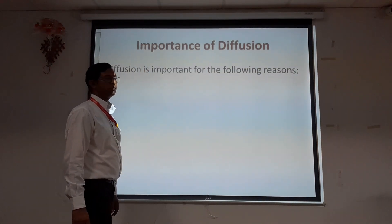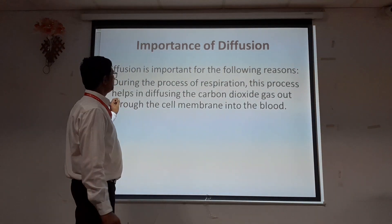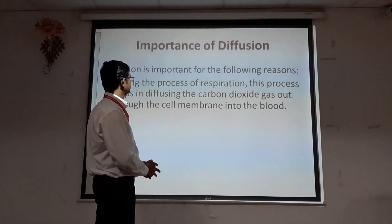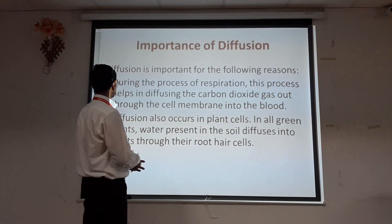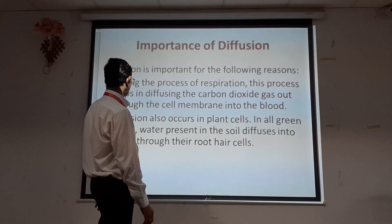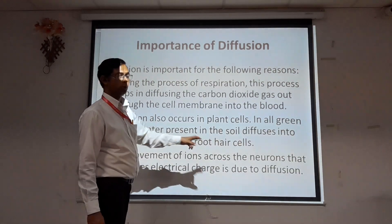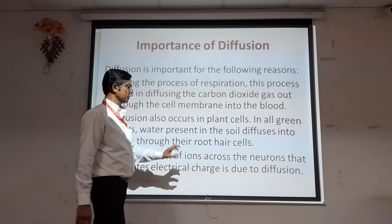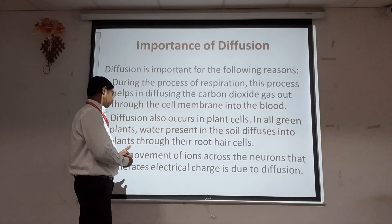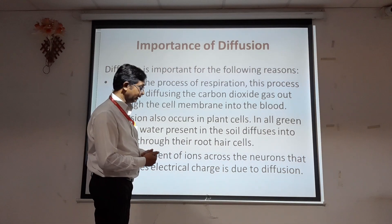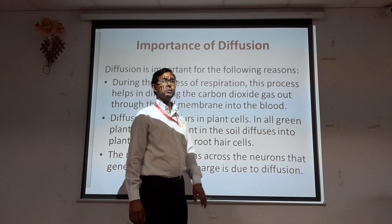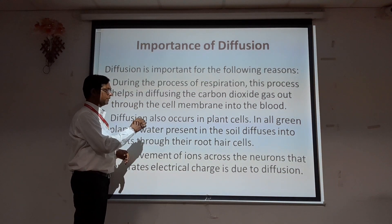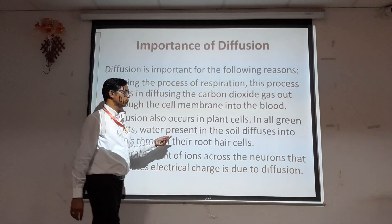Diffusion is important for the following reasons. First, during the process of respiration, diffusion helps in the movement of carbon dioxide gas out through the cell membrane into the blood. Diffusion also occurs in plant cells — in all green plants, water present in the soil diffuses into the plant through their root hair cells. Additionally, the movement of ions across neurons that generates the electrical charge is also due to the process of diffusion.